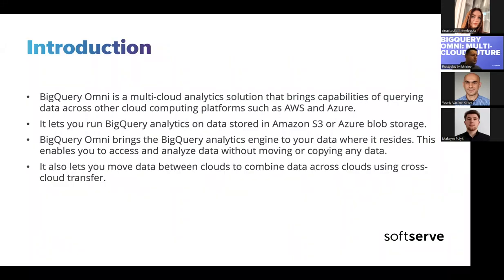Many organizations now store data in multiple public clouds, not just one. Often this data ends up being isolated because it's hard to get insights across all of these clouds in one place. Businesses and engineers want to analyze data with a multi-cloud tool that is inexpensive, fast, and does not create additional overhead of decentralized governance. Here comes BigQuery Omni as this tool to reduce these frictions with a unified interface.